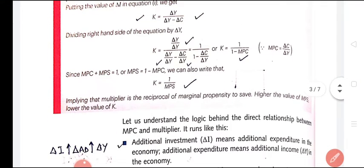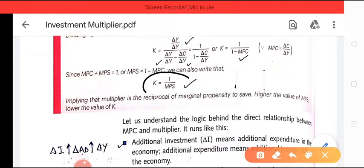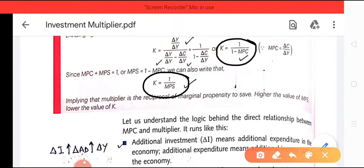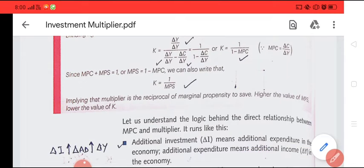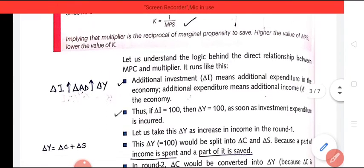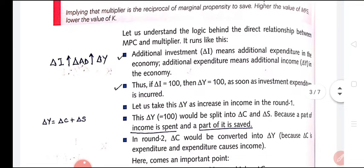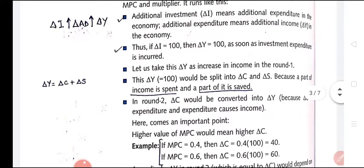These are two formulas for calculating K. Also, since 1 minus MPC equals MPS, the third formula becomes K equals 1 upon MPS. So the three formulas are: K equals 1 upon MPS, K equals 1 upon 1 minus MPC, and K equals change in Y by change in I. A change in investment leads to a change in aggregate demand and a change in income, which is either consumed or saved.